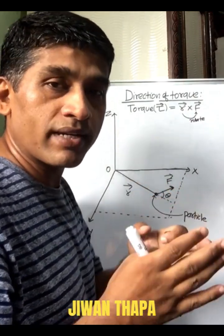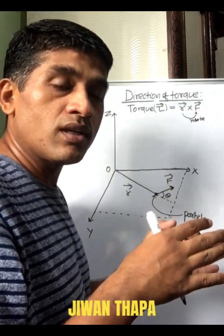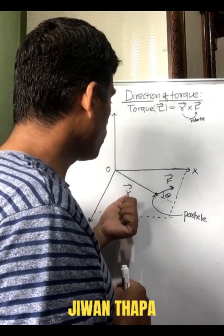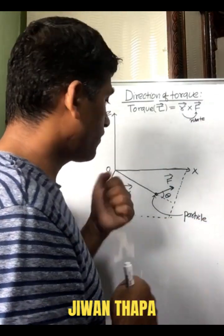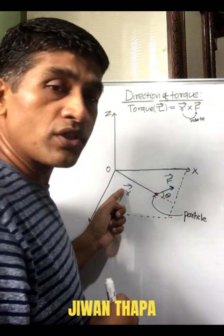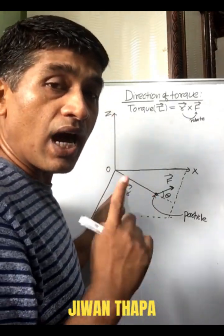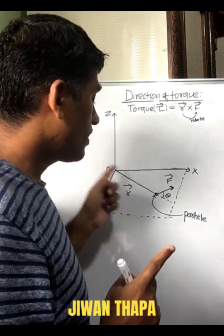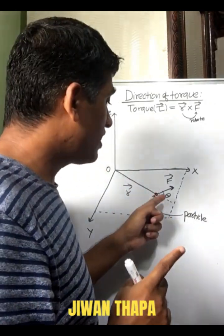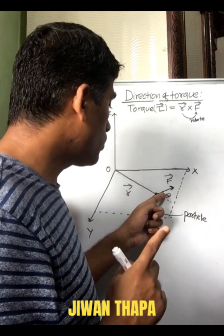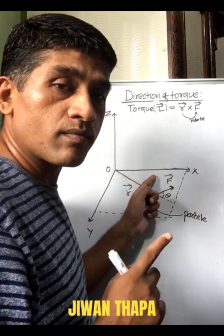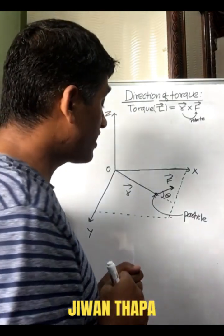Now let us come to this figure. We have a particle which is at position vector r from the origin, and F is the force acting on the particle, and theta is the angle between the position vector and force.